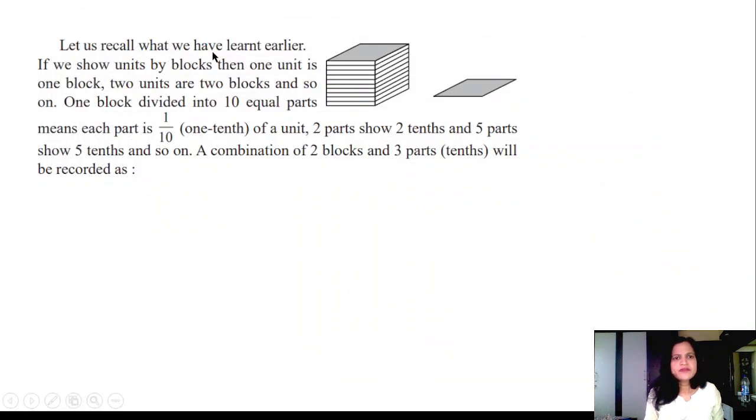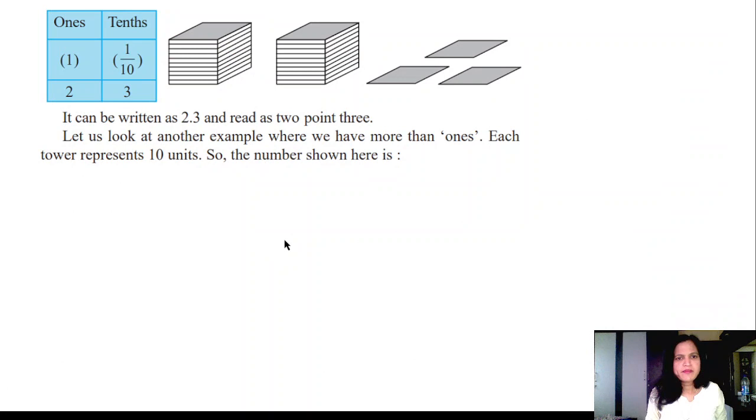Let us now recall what we have learnt earlier. If we show units by blocks then 1 unit is 1 block, 2 units are 2 blocks. So 1 block divided into 10 equal parts means each part is 1 tenth of the unit. 2 parts shows 2 tenths, 5 parts shows 5 tenths and so on. Combination of the blocks and the 3 parts will be recorded.